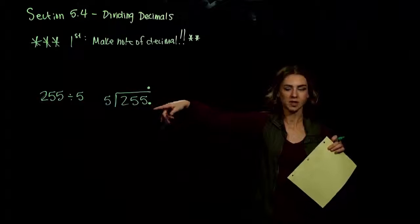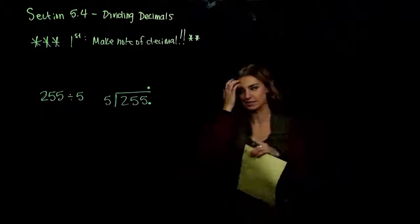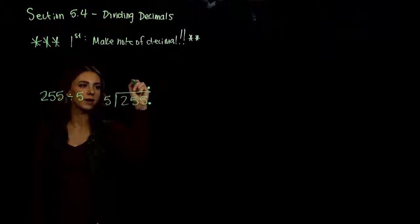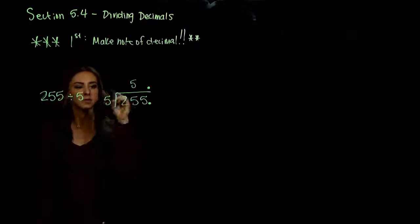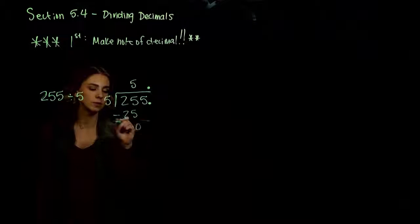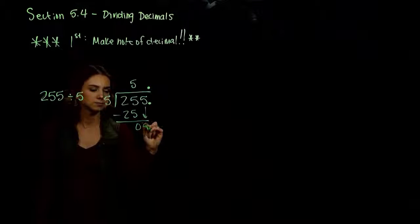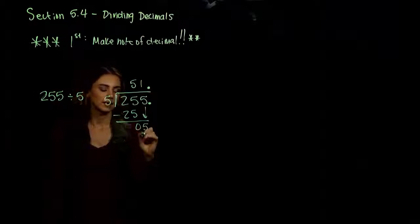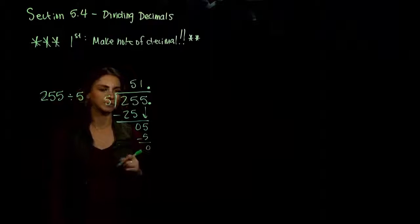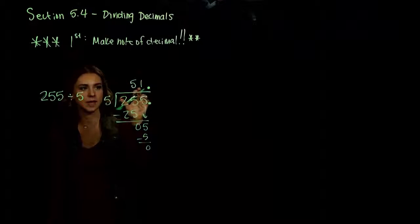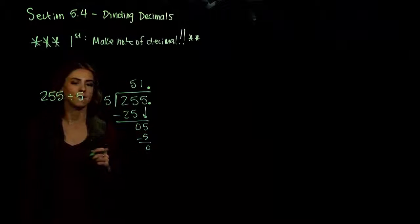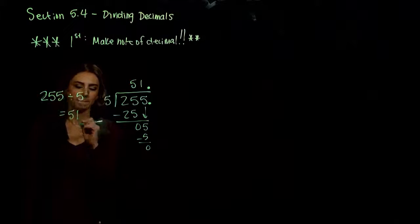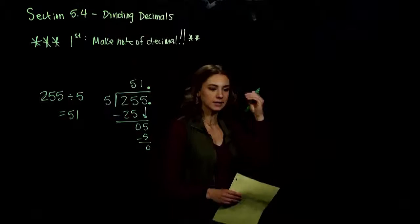These are whole numbers, but we've written in the decimal — let's see what it produces. 5 doesn't go into 2, so 5 goes into 25, 5 times. 5 times 5, we get 25, a difference of 0. Bringing down what's next, how many times can 5 go into 5? Once, and we have no remainder. So our answer is 51.0 — just 51. But again, we have the practice of where to find the decimal.